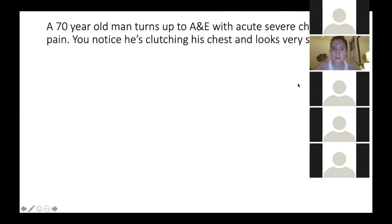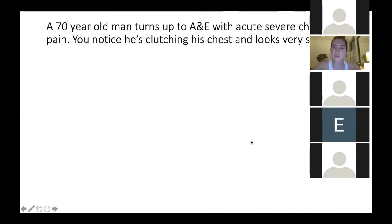Can you tell me what SOCRATES actually stands for? Site, onset, character, radiation — A is associated symptoms — time, alleviating factors, and severity. With A, associated symptoms would be any sweating or shortness of breath related to his chest pain. So here: pain in his chest, right in the centre, started half an hour ago, it's a sharp pain, he needs to catch his breath. Radiation sometimes to his jaw, experiencing nausea and vomiting, sweating, shortness of breath. Nothing's helped to relieve it. It started with a brisk walk with his dog, and it's about a 9 out of 10 on the pain scale.